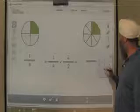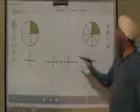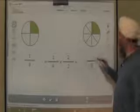One, two, three, four, five, six, seven, eight equal parts. It used to have one shaded part. Now it has twice as many. Two shaded parts.